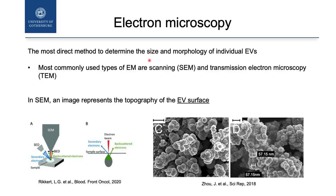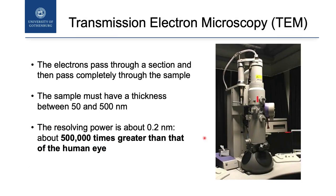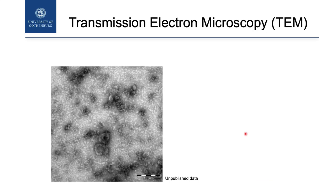And then, finally, electron microscopy. All of you know what electron microscopy is — it's a way to look at the vesicles. We have different types: scanning electron microscopy looks at the surface of the vesicles, but I will not tell you anything about it because I'm not an expert. But I did quite a lot of transmission electron microscopy. This is a typical picture of EV by electron microscopy — for sure not the best ever, but this is a real example.